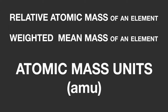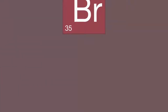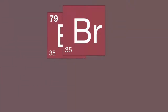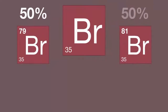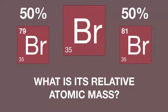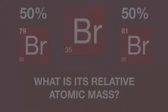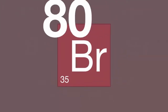Here's another example for you. A sample of bromine contains 50% bromine-79 and 50% bromine-81. What is its relative atomic mass? Pause the video — you may be able to work this out straight away. If not, write it down as in the chlorine example. The answer is 80.